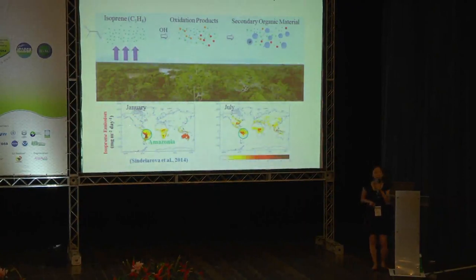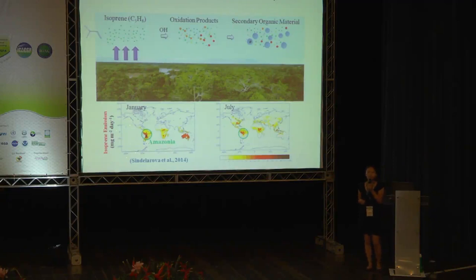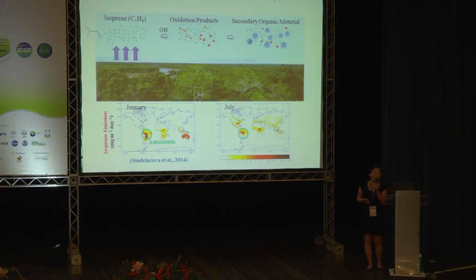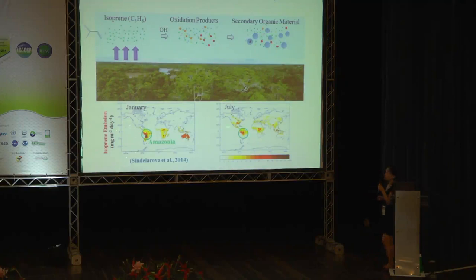We have heard a lot about isoprene in the past one week. Isoprene is a dominant biogenic trace species emitted from the Earth. The atmospheric oxidation of isoprene can have large influence on the oxidation capacity of the atmosphere and also contribute significantly to SOA formation. Globally speaking, the isoprene emission is highest, most vigorous in the tropical region, especially over Amazonia.